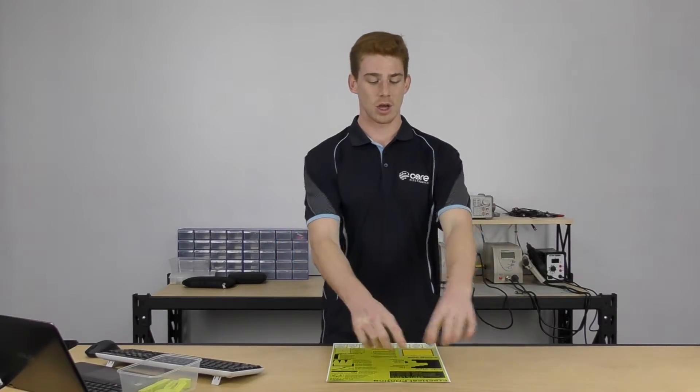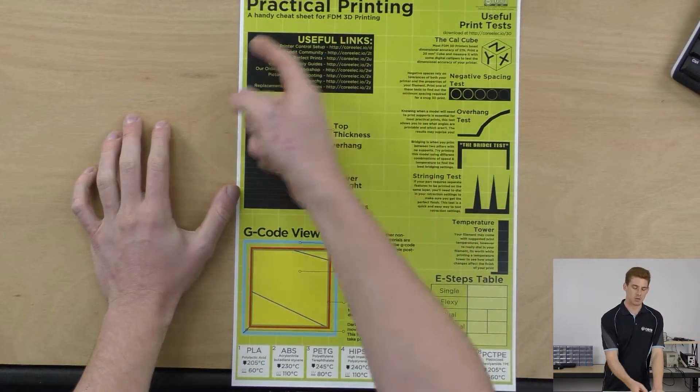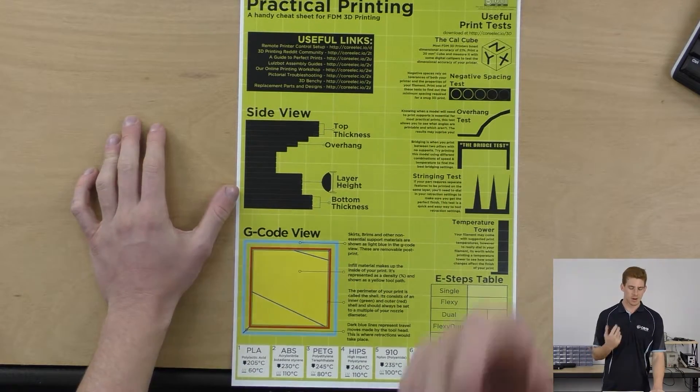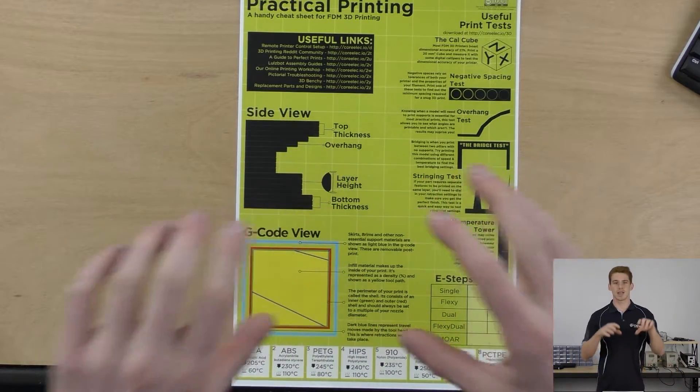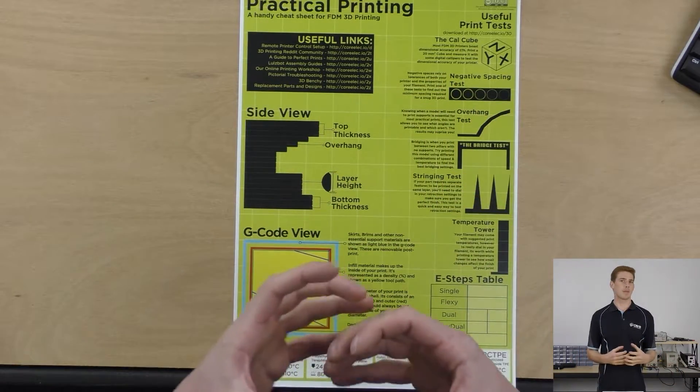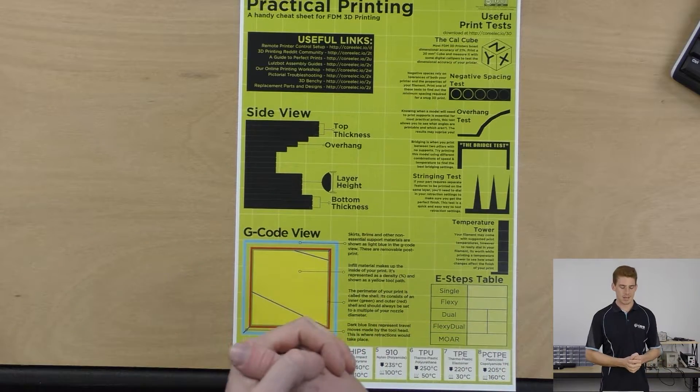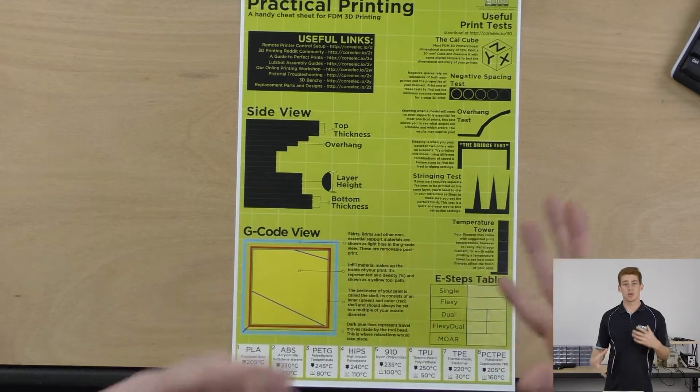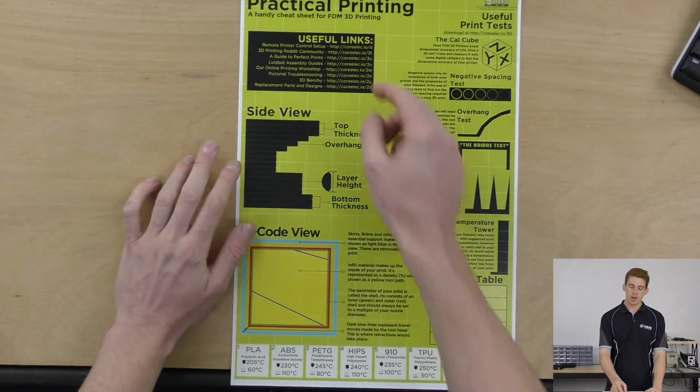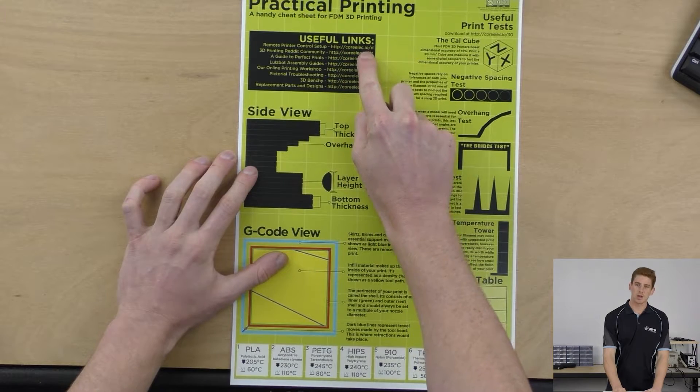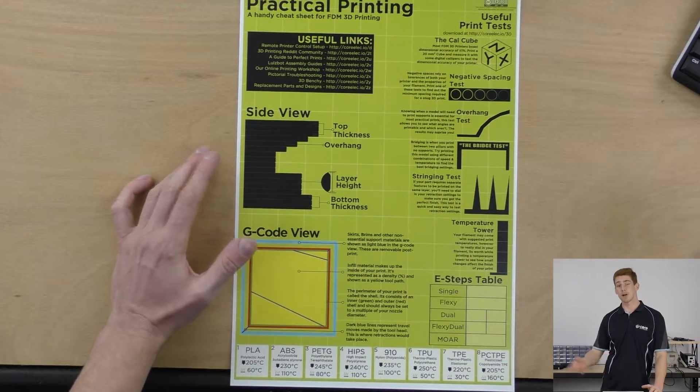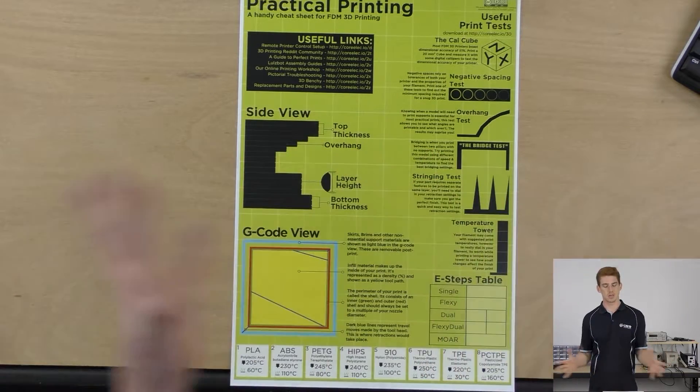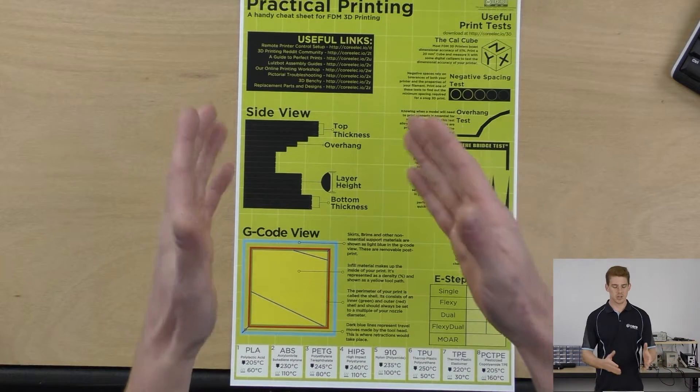We'll start off with our useful links section. Up the top here I've put down all my favorite links. Granted two of them are from myself, but if I was getting into 3D printing I think these are the core things that I really want to know about at the start. We've got the remote printer control setup which is using OctoPrint and how you can set up a Raspberry Pi to control your printer over a network. If you type in this tiny URL here to an internet browser's URL bar, it'll take you straight to that tutorial with a video alongside it, just explaining the whole process start to finish.